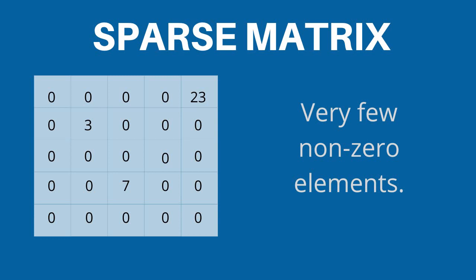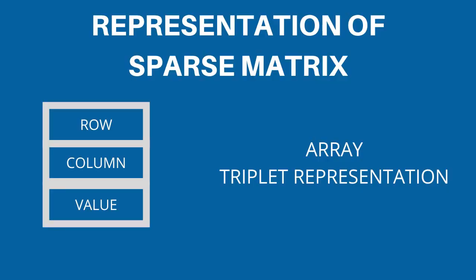Representation of sparse matrix: Representing a sparse matrix by a 2D array leads to wastage of lots of memory. So, instead of storing zeros with non-zero elements, we only store non-zero elements. We use an array, that is triplet representation, for storing sparse matrix.